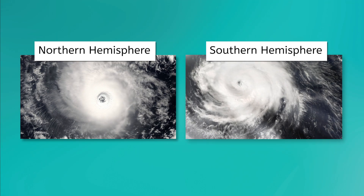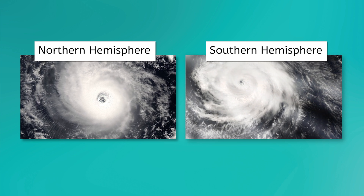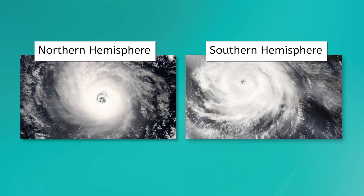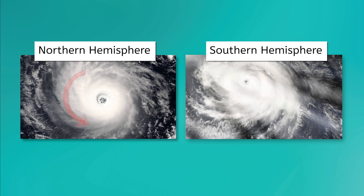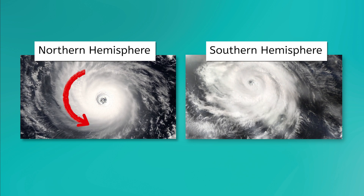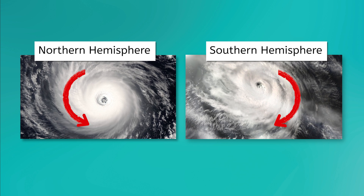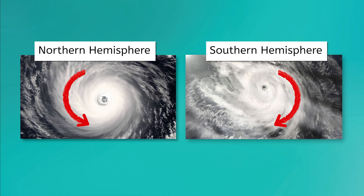Let's look at these powerful storms. The first hurricane is in the Northern Hemisphere and the second is in the Southern Hemisphere. What do you notice about these two hurricanes? Did you know that hurricanes spin counterclockwise in the Northern Hemisphere and clockwise in the Southern Hemisphere?